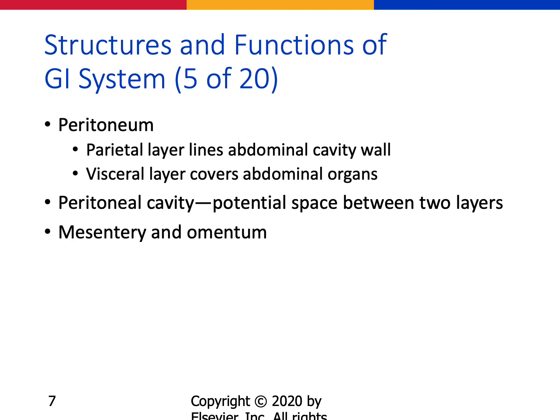The peritoneum almost completely covers the abdominal organs. The two layers are the parietal layer, which lines the abdominal cavity wall, and the visceral layer, which covers the abdominal organs. The peritoneal cavity is the potential space between these two layers. The two folds are the mesentery, which attaches the small and part of the large intestine to the posterior abdominal wall and contains blood and lymph vessels, and the omentum, which hangs like an apron from the stomach to the intestines and contains fat and lymph nodes.